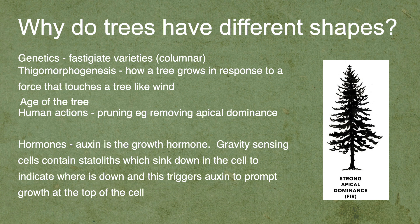Hormones also play a role. Auxin is the growth hormone in plants and trees, and any changes to hormones — like removing apical dominance — change where auxins are produced and can change the shape of the tree. It's amazing how complex tree structures are. For example, trees have small gravity-sensing cells containing statoliths — small stone-like structures. As they sink to the bottom of the cell, they indicate where down is, prompting auxin to drive growth upwards at the top of the cell. If anything happened to those statoliths, you'd have trees that just grew along the ground instead of growing upright.